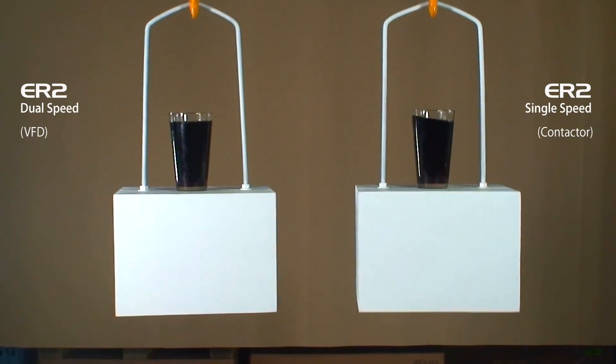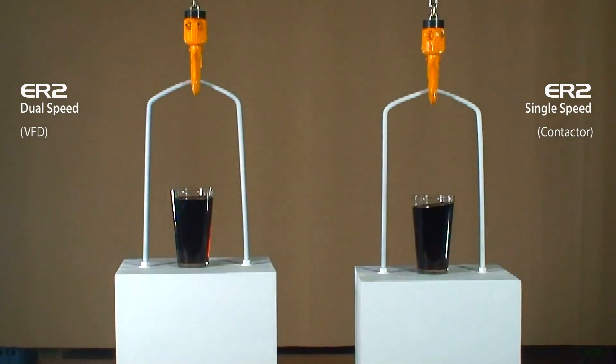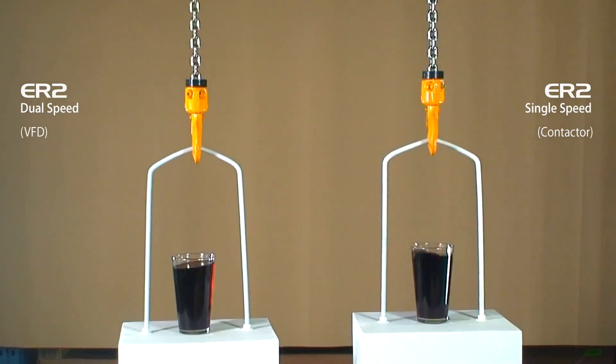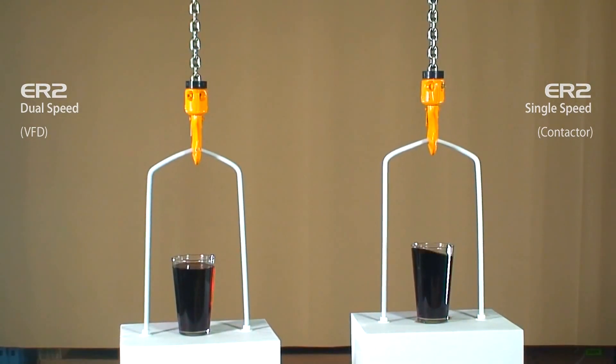The contactor driven hoist engages and disengages the brake more abruptly, which may introduce a bit of swing or bounce on the load.